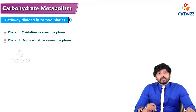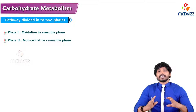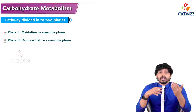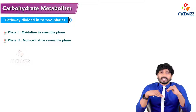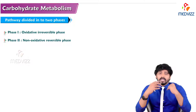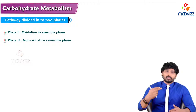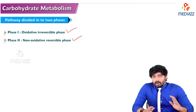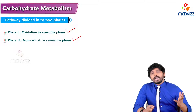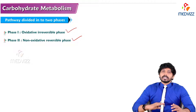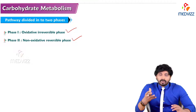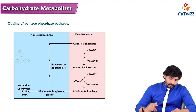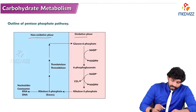When discussing the pathway in detail, it is divided into two parts — similar to glycolysis being divided into phase 1 and phase 2. HMP shunt also has two phases: an oxidative phase and a non-oxidative phase. In the oxidative phase, oxidation of glucose takes place. In the non-oxidative phase, there are synthetic reactions to produce 5-carbon compounds such as pentoses.